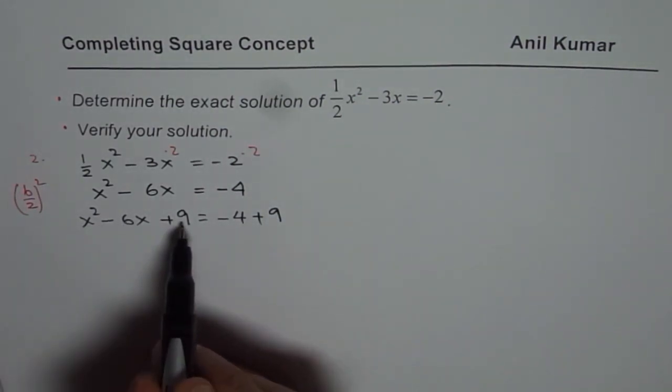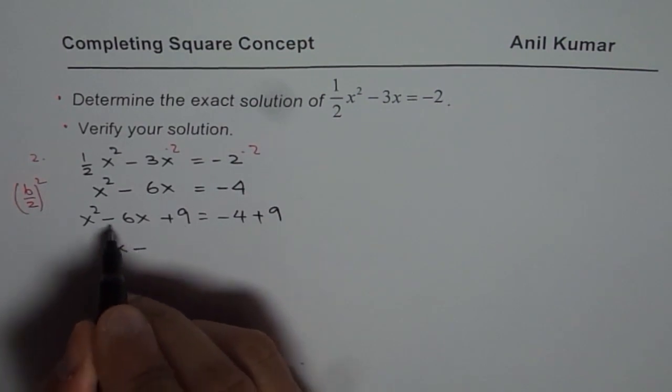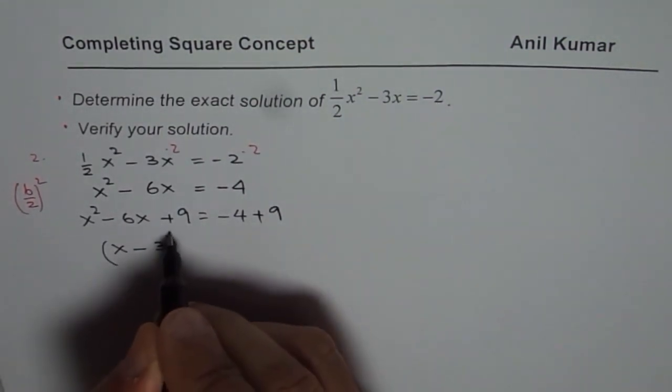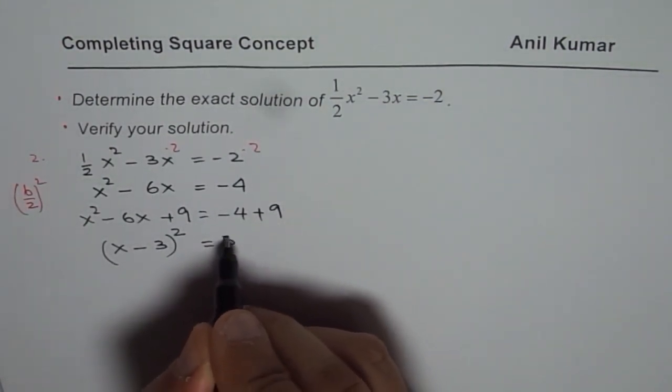Now these three terms form a perfect square and I could write them as x minus sign from here 3 square. So 3 square equals to minus 4 plus 9 is number 5.